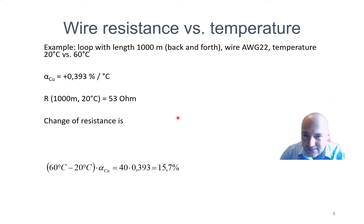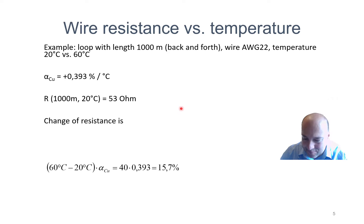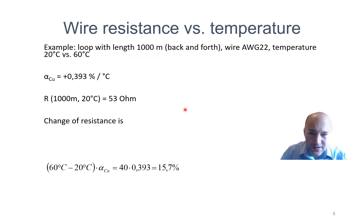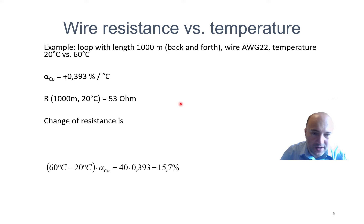Why is it important to know about wire resistance? The current loop and voltage signal will both be influenced by the wire diameter. For the voltage signal, the wire resistance definitely matters. For the current signal, it is only a problem above some limit. The wire resistance changes with temperature, which can be quite significant and may degrade our voltage signals.